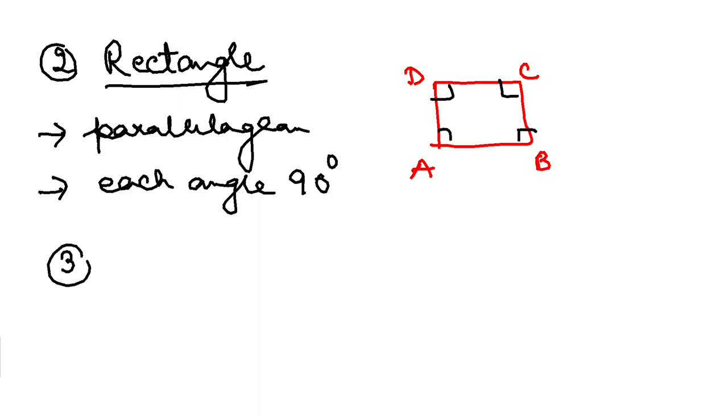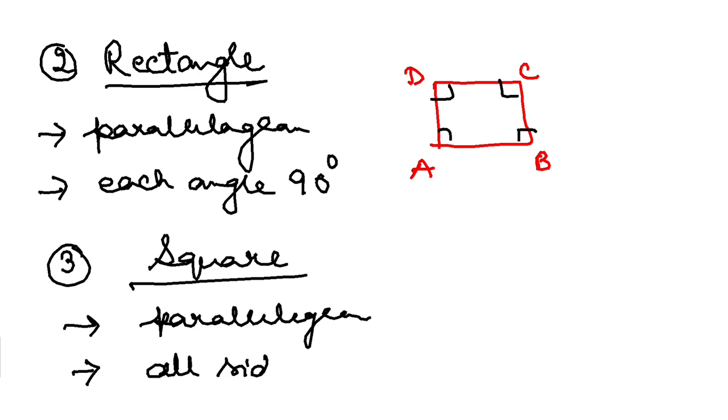Now the third one, number three is your square. Square again is a parallelogram. It's a parallelogram and here all sides are equal. So this is a parallelogram and all angles are 90 degrees.